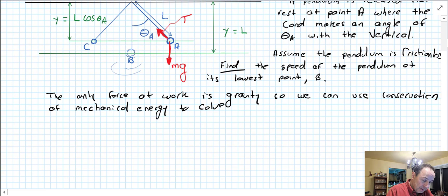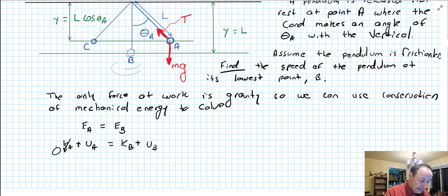The total mechanical energy at A equals the total mechanical energy at B. Mechanical energy is kinetic plus potential, and that's got to equal the kinetic plus the potential at B. It's released from rest, so we know that this is zero.